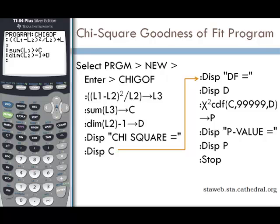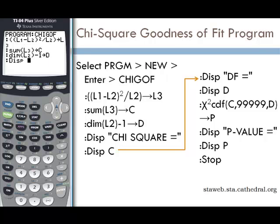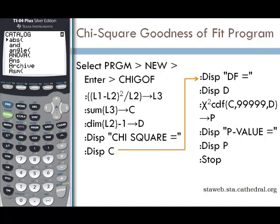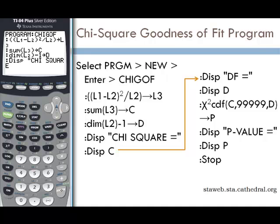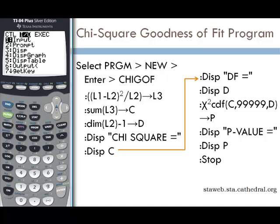Now we want to do a series of displays. To find the display function, go under PRGM, then I/O, option three. We want to put this in quotes, so alpha-lock, then type "chi square =". The equals sign is found in the catalog under SECOND ZERO — scroll up from the bottom to find it. Select the equal sign, press ENTER, and close the quote. Then add another display (PRGM > I/O > option 3) to show C, since C is our chi-square value.